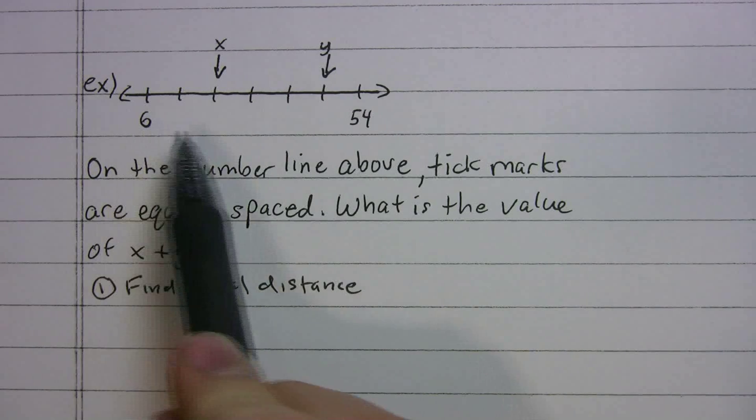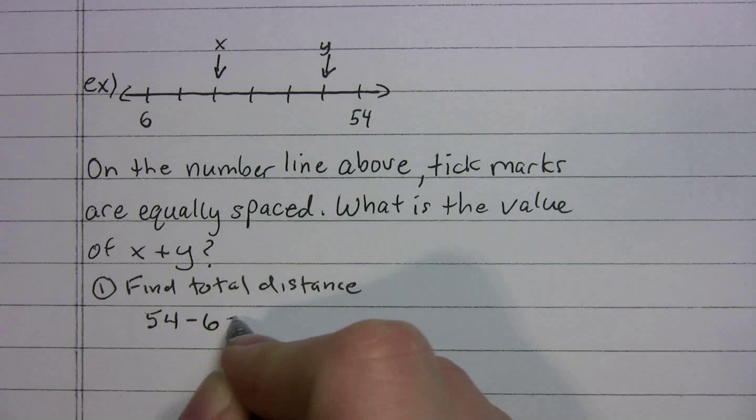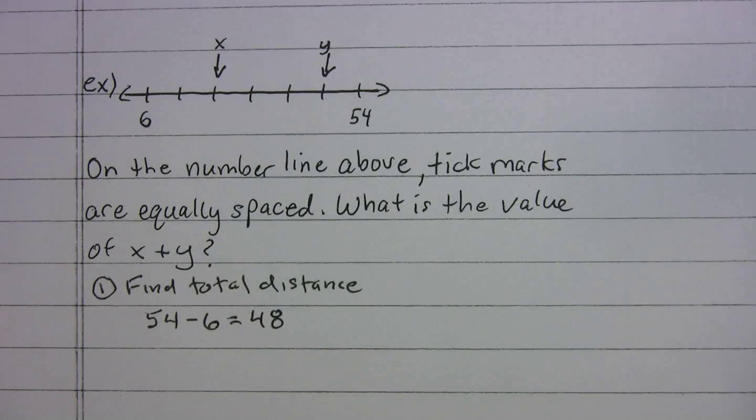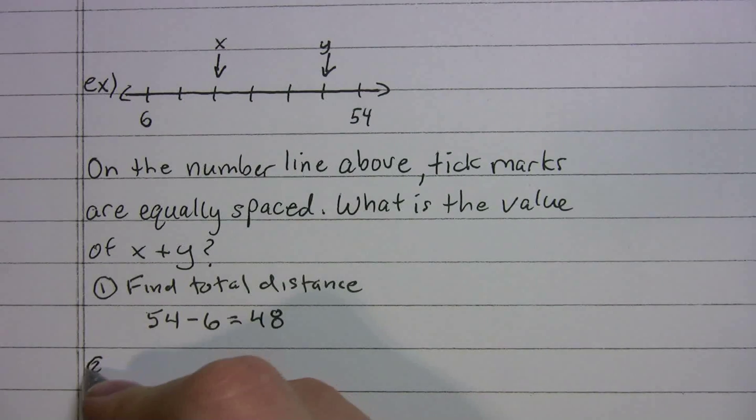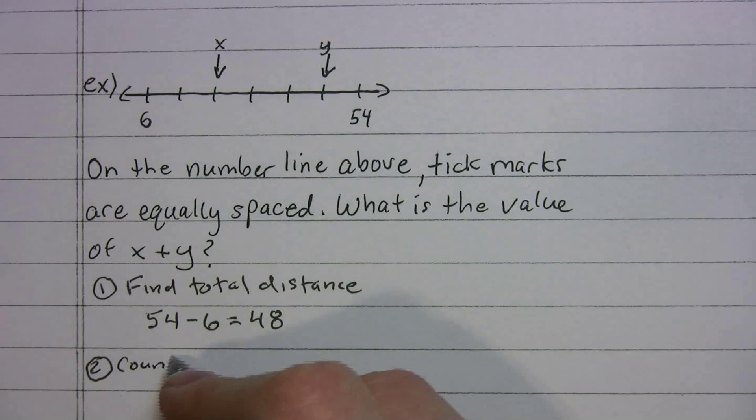So if we're going from 6 to 54, I'm just going to do 54 minus 6, which gives us 48. So that's our total distance. Second thing you're going to do, you're going to count the spaces.